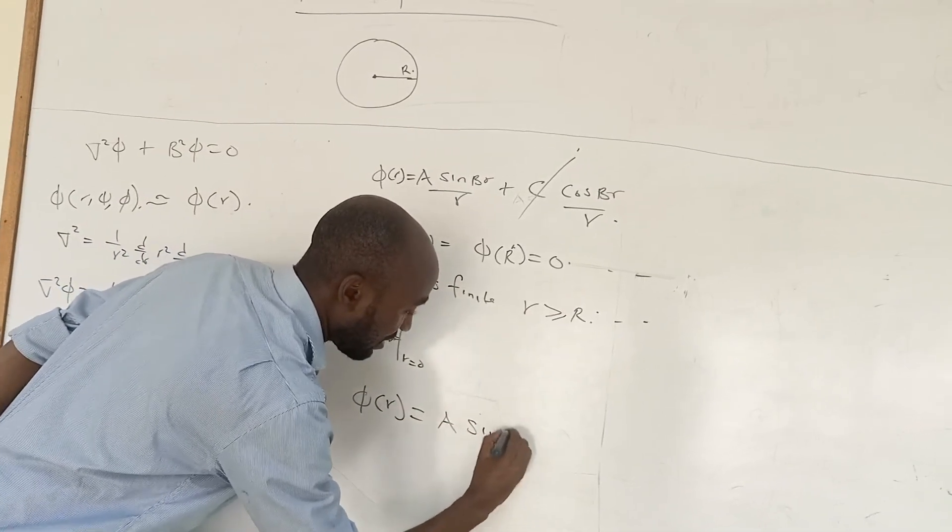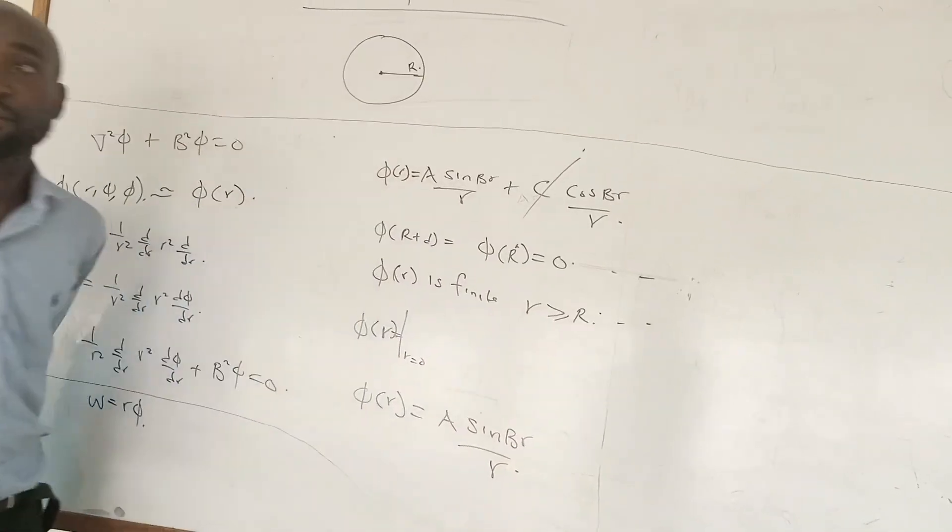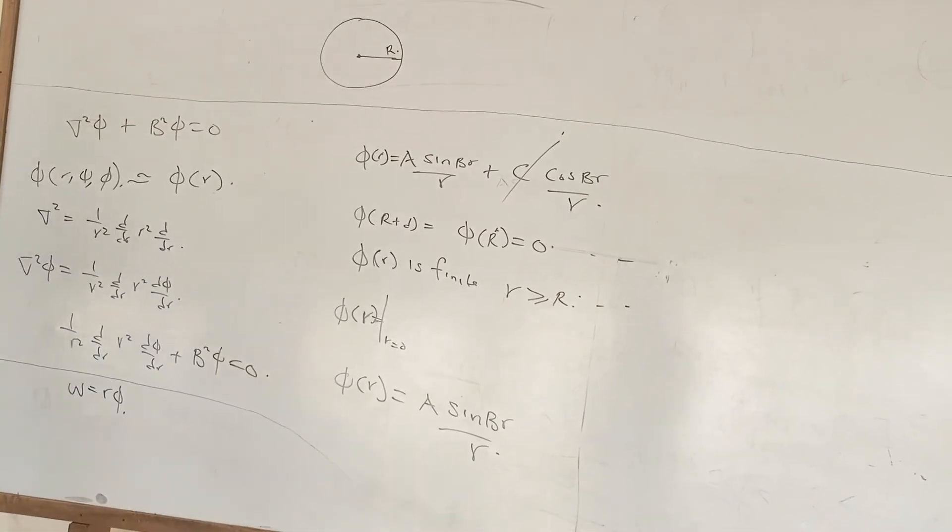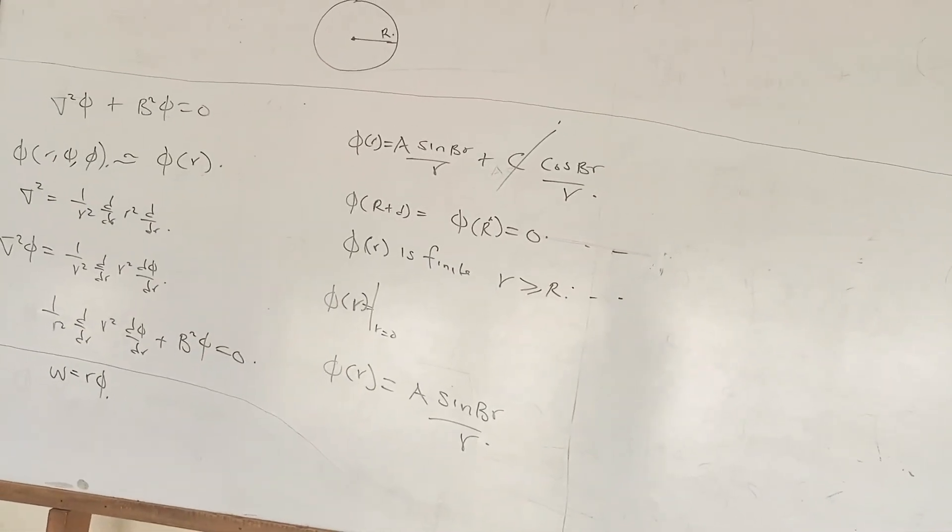So we are now, because of that, phi is going to be A sin Br over r.